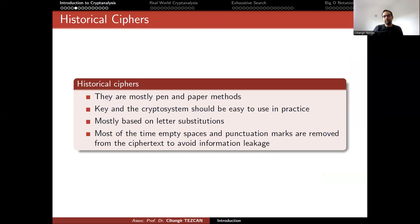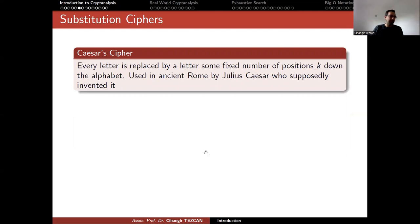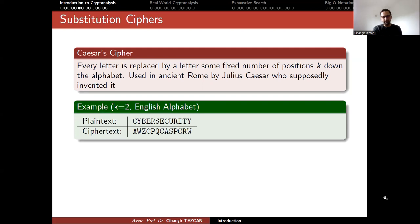So now let's look at historical ciphers. They are mostly dependent on paper methods. The secret key and the cryptosystem should be easy to use in practice because you don't have computers, you don't have machines in the past. You have to use pen and paper. So they have to be really easy to be used in practice. So they are mostly based on letter substitutions. Most of the time empty spaces and punctuation marks are removed from the ciphertext to avoid information leakage. So let's look at the most famous example, the Caesar cipher. So every letter is replaced by a letter for some fixed number of positions down the alphabet. And it is used in ancient Rome by Julius Caesar, who supposedly invented it. But any elementary school kid could most probably also probably discover it too.